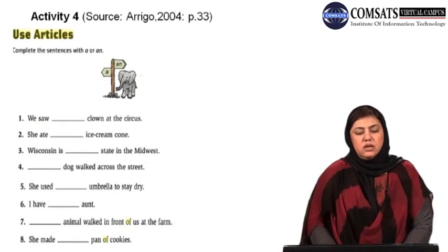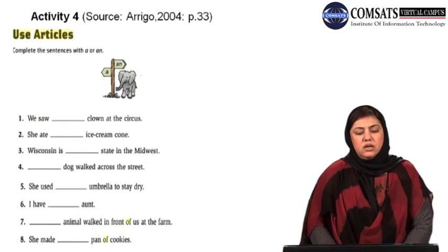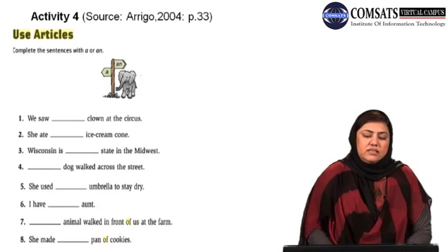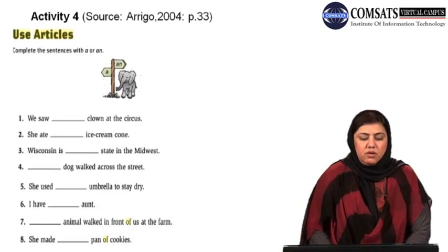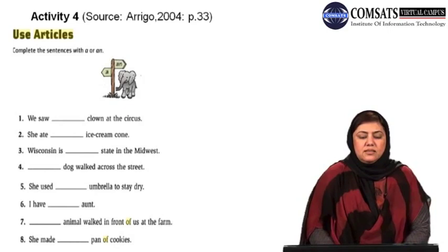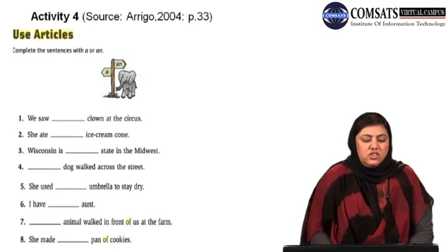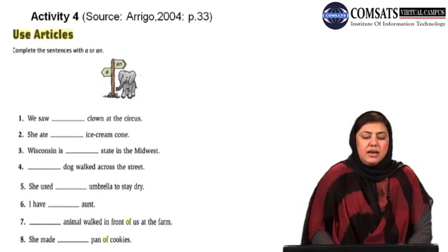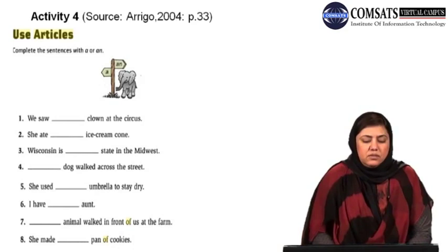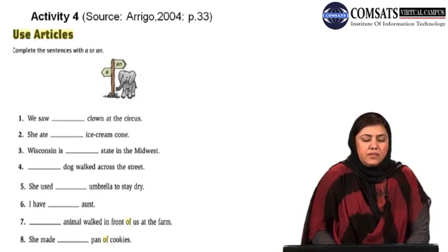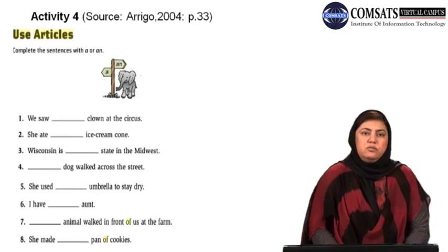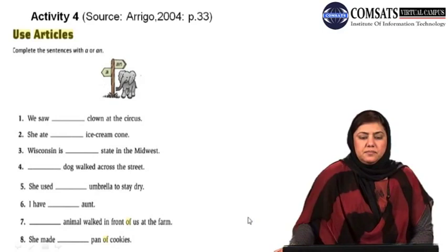Here is a small activity where you use 'a' or 'an' in context. We saw a clown at the circus. She ate an ice cream cone. Wisconsin is a state in the Midwest. Our dog walked across the street. She used an umbrella to stay dry — U produces a vowel sound, so 'an'. I have an aunt. An animal walked in front of us at the farm. She made a pan of cookies — P produces a consonant sound, so 'a'.